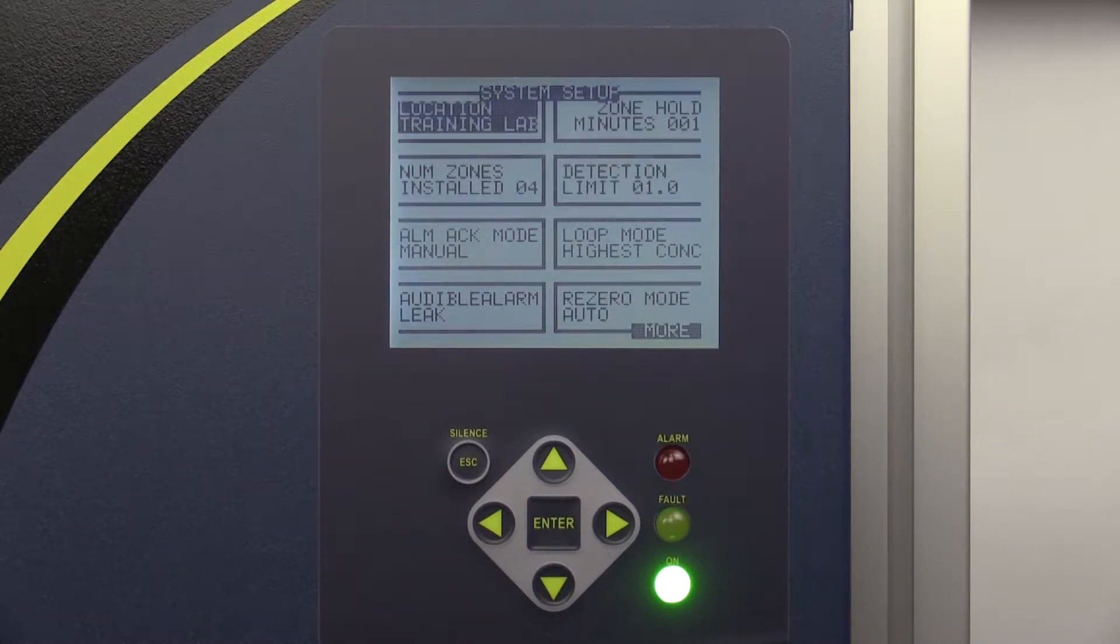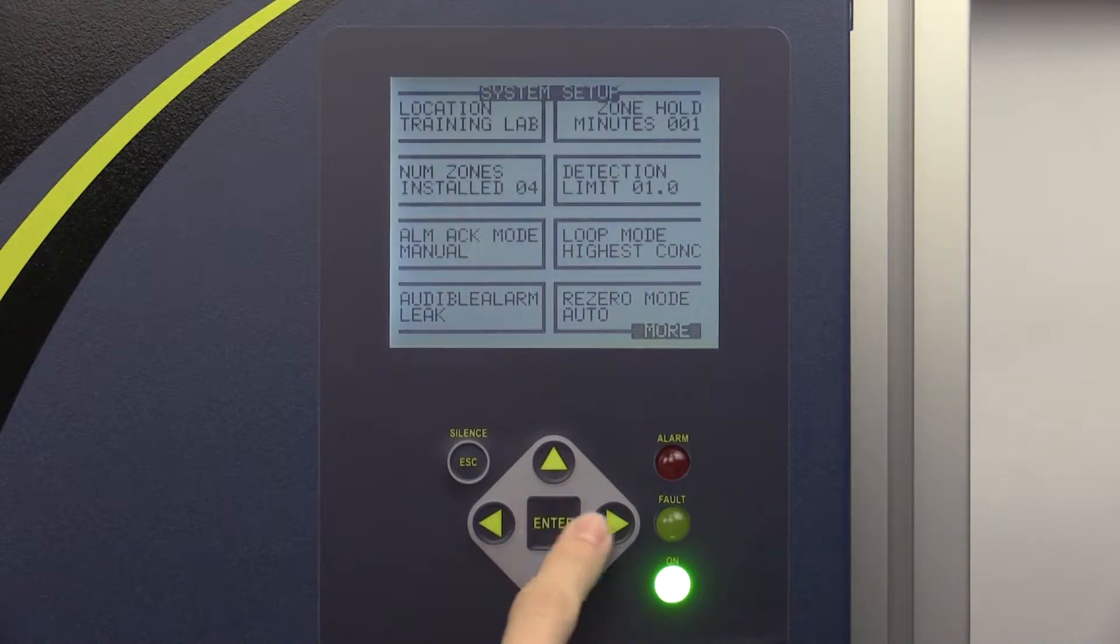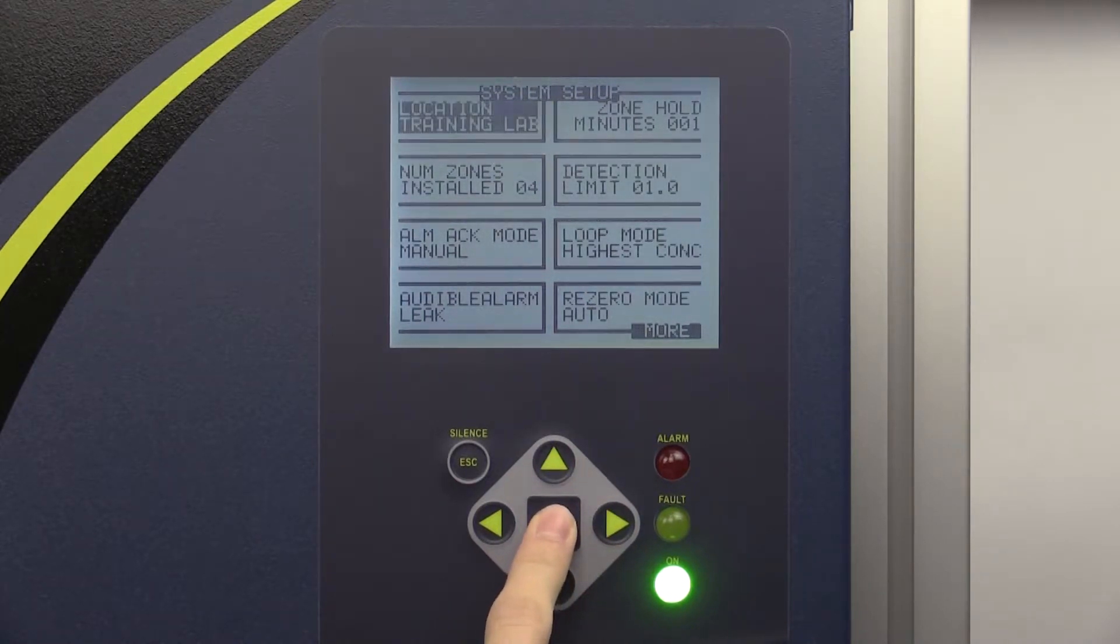Let's take a look at the components on the system setup screen. Use the location tab to identify the monitor's location using up to 12 alphanumeric characters. The location can be edited by pressing enter and then using the up and down arrows to edit the characters. When you have finished entering the name, press the enter key again to lock it in. The location name can be edited at any time.